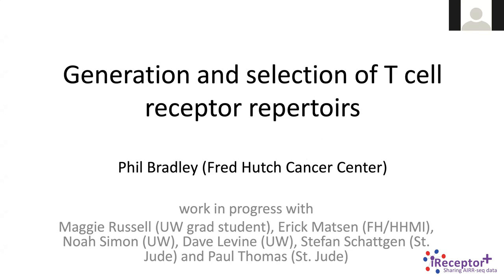I'm going to talk today about some work in progress, and I want to emphasize from the beginning that this is a collaborative work with a group of Eric Mattson here at the Fred Hutch, Paul Thomas at St. Jude, and some collaborators at UW — Noah Simon and Dave Levine. The general topic is how T cell receptors get made, and what influences the distribution of T cell receptors that we see when we sequence them from the blood.